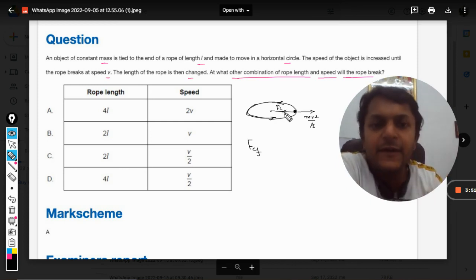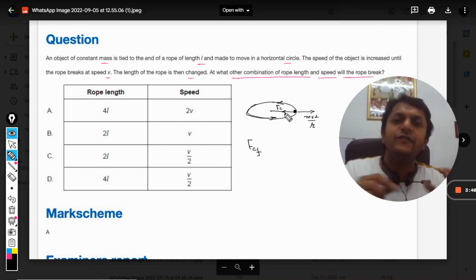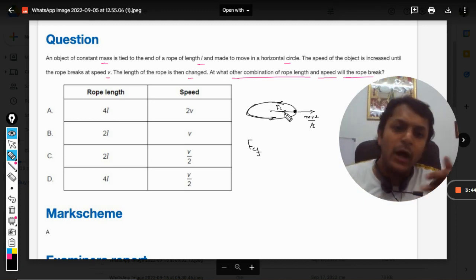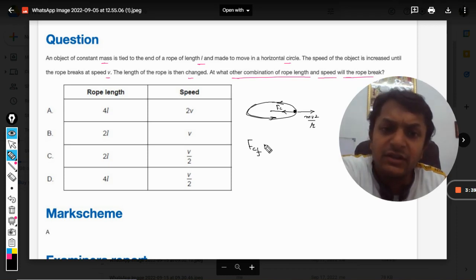Centripetal force is towards the center and it is written as FC. So this is towards the center, but the centrifugal force is opposite to it and it is away from the center. Because they're an action-reaction pair, the magnitude is equal and it is given by mv²/r.